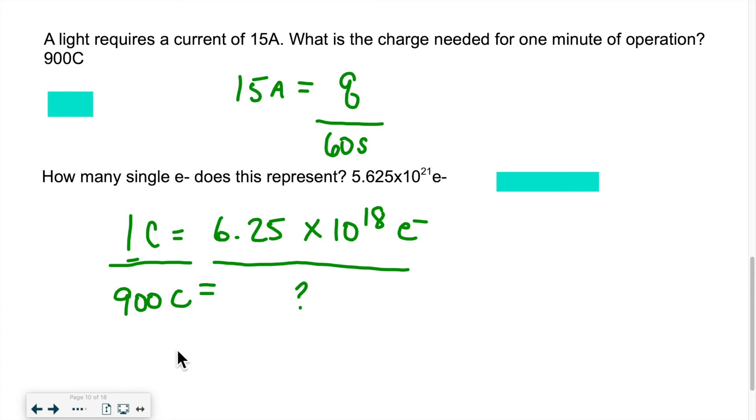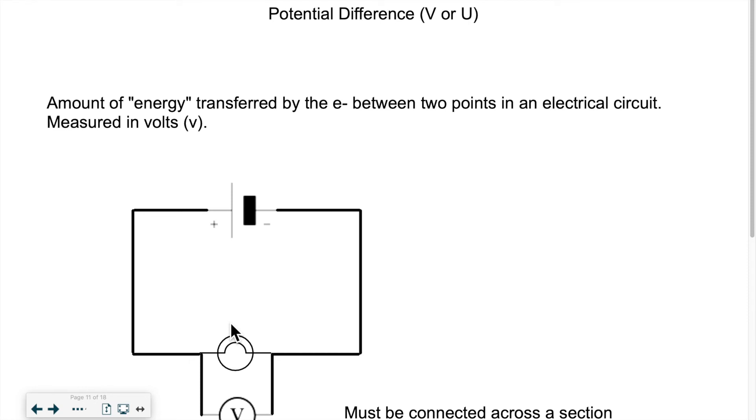Now let's take a look at voltage or potential difference. Potential difference is represented by the letter V, capital V. Sometimes you will see capital U, so it could be one or the other, but the most common one is capital V.